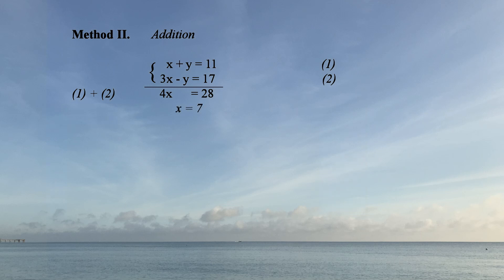To find y, substitute x = 7 into either equation 1 or 2. We'll use equation 1 because it is simpler. And we get y = 4.